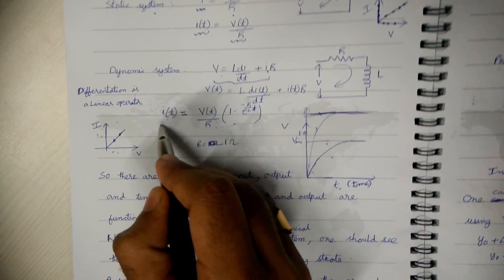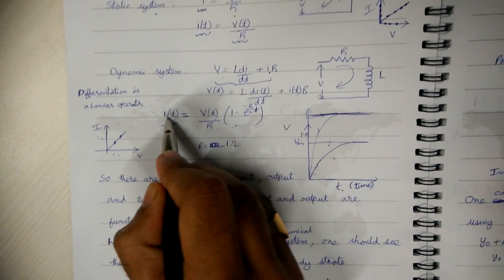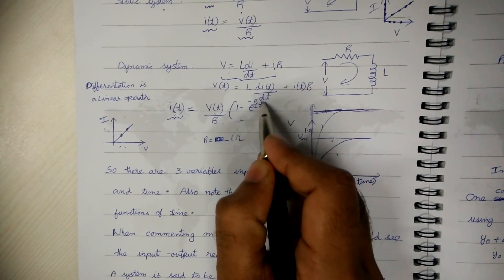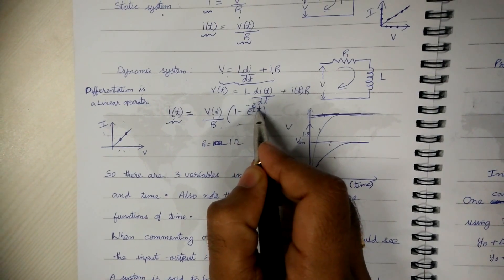So the expression for current is given by I(t) equals V(t) by R times 1 minus e to the power minus R by L times t.